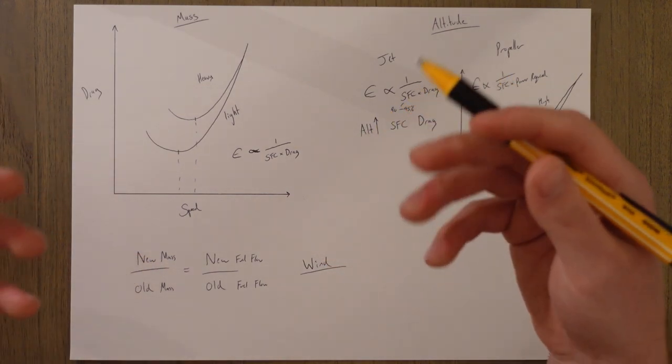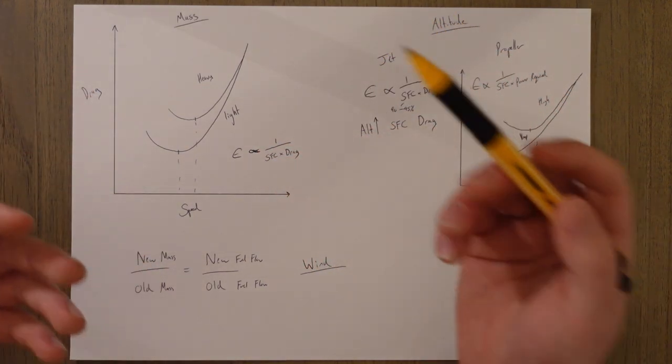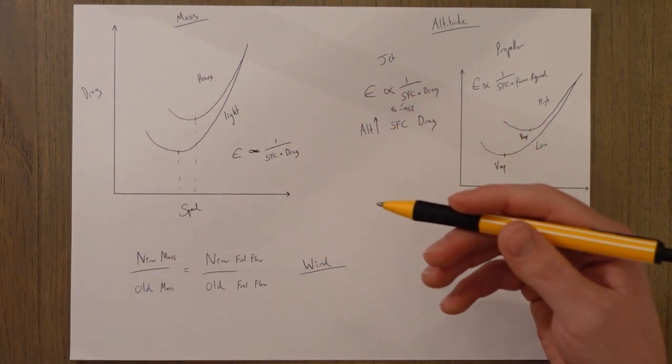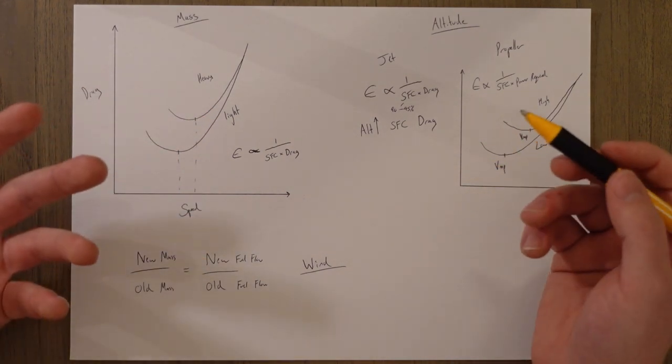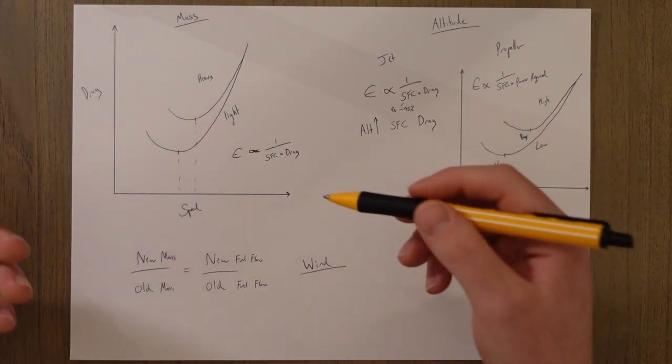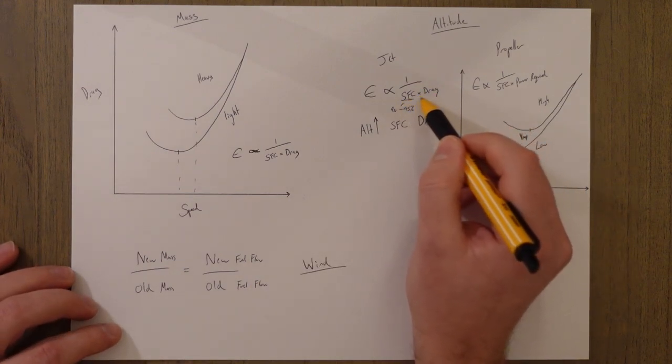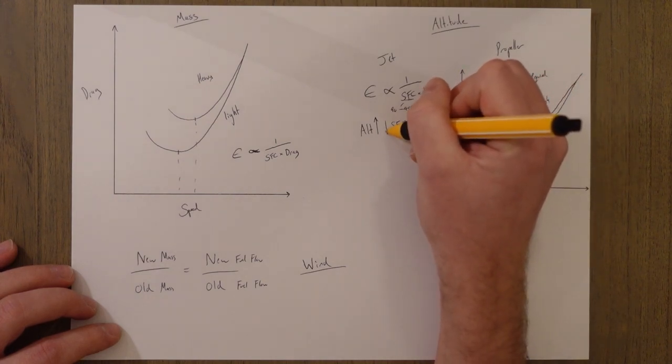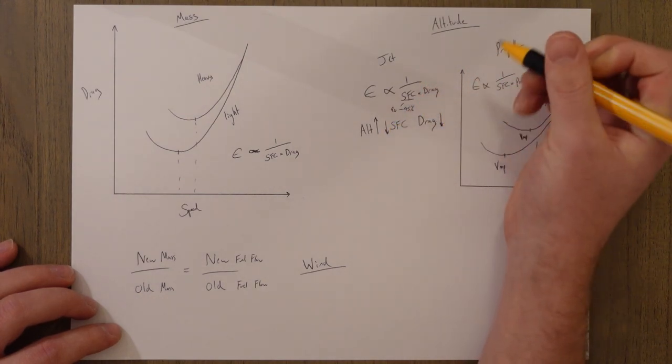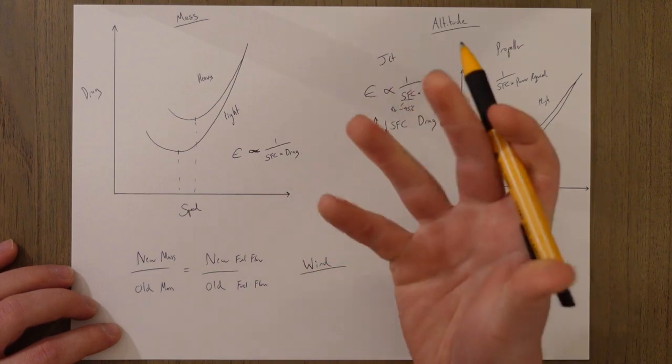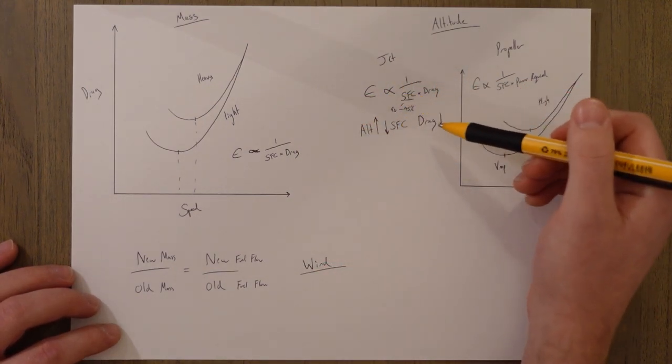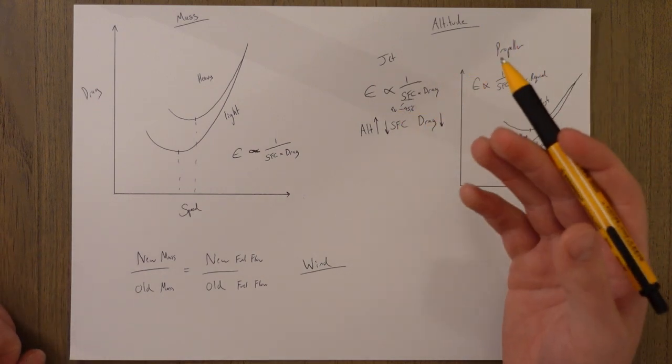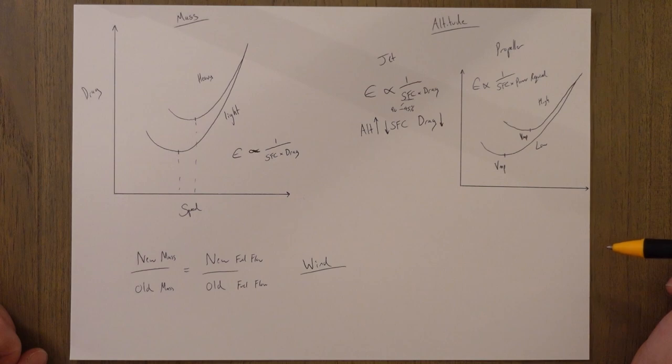In practice though when we're thinking about endurance it's normally when we're holding near an airport which means we're very unlikely to be doing that up at a nice cruising altitude. So for a jet aircraft the endurance is reduced as we're lower down because we're not going to be operating in this ideal range. So as altitude increases the specific fuel consumption goes down and the drag would also go down meaning the endurance goes up and then if you flip that as we get lower we're going to burn more fuel, it's going to get more drag. It's actually quite significant on jets how much your endurance is reduced when you go down to lower altitudes.